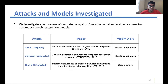In our evaluation, we considered several attacks. Two of them — Carlini & Wagner (C&W) and Kenanr — are targeted audio attacks, and Universal Adversarial Examples is an untargeted attack. We also evaluated against corresponding victim ASR models for each of these attacks.